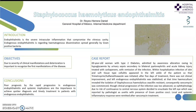Endophthalmitis is the severe intraocular inflammation that compromises the vitreous cavity. The endogenous endophthalmitis is regarding hematogenous dissemination spread, generally by gram-positive bacteria. Due to the severity of clinical manifestations and deterioration of the disease, it is important to recognize the first manifestations of the disease.